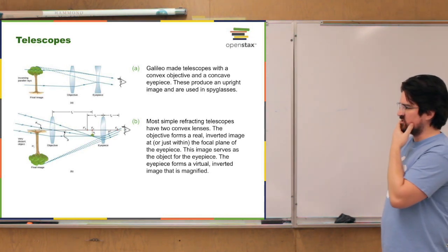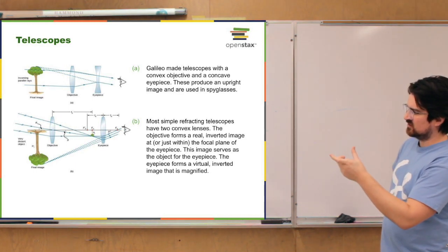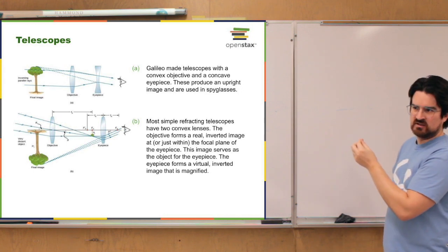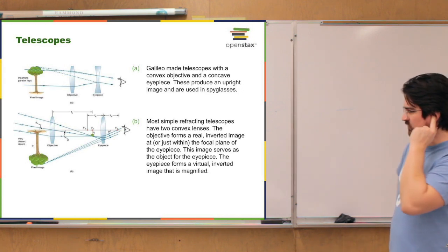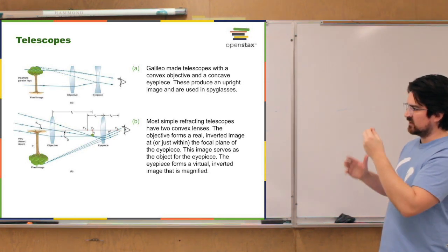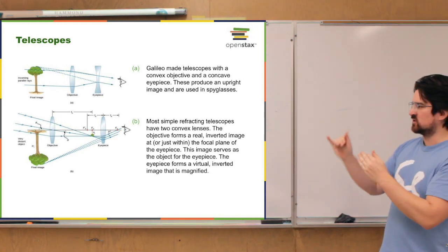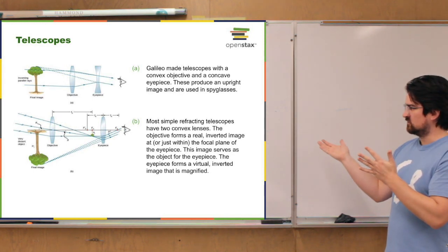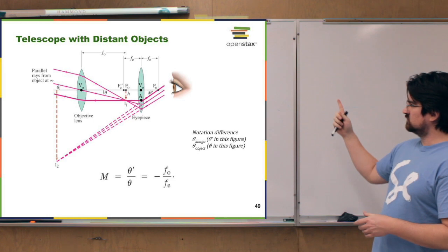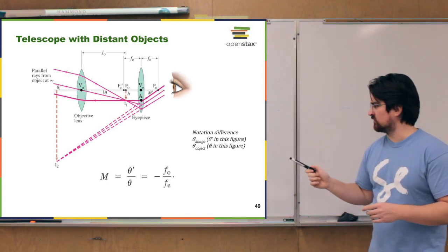This two-convex-lens telescope might seem similar to the microscope we just looked at, and it is a very similar setup. The main difference is that the image formed by the objective lens in between the objective and the eyepiece is going to be smaller than the actual object you're looking at. In the microscope, that intermediate image is larger than the object. This means there's actually no magnification or enlargement from the objective lens — only the eyepiece does any enlargening in refracting telescopes.